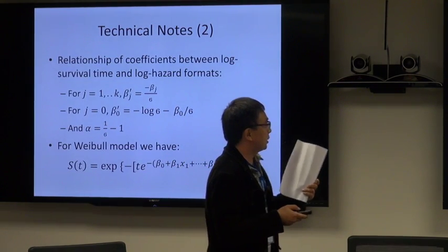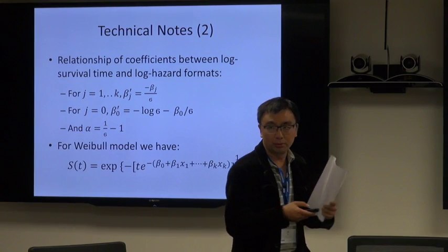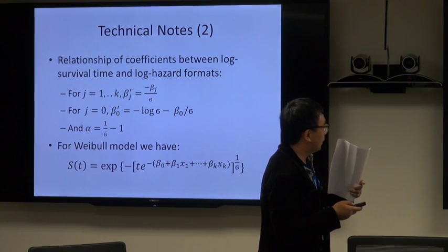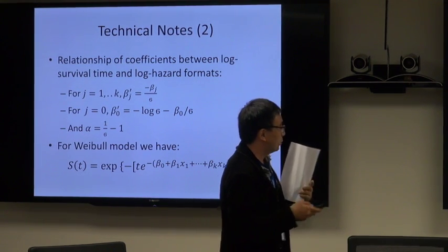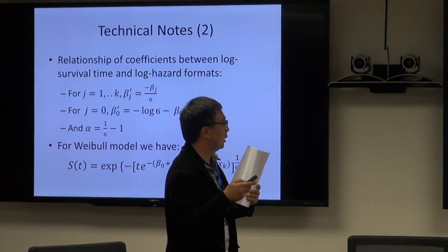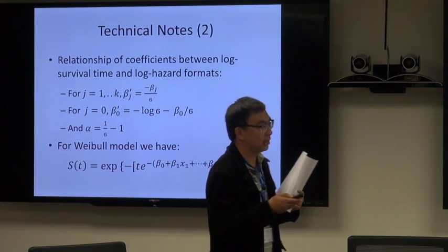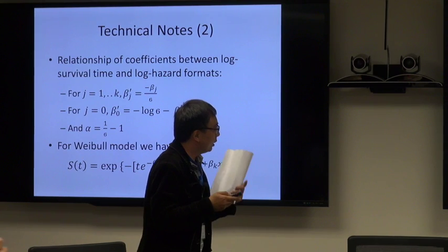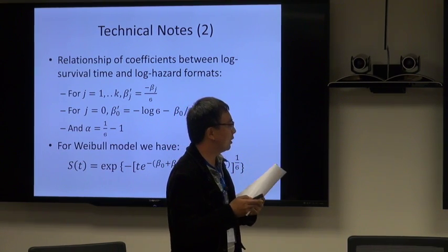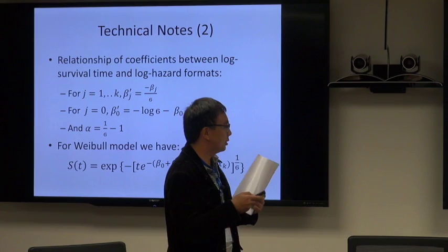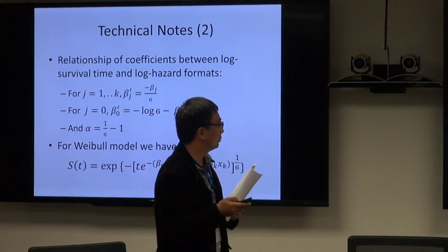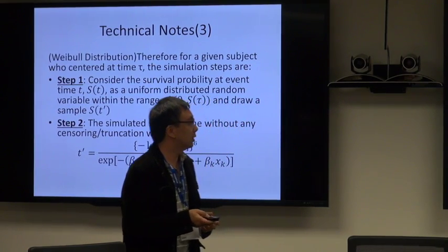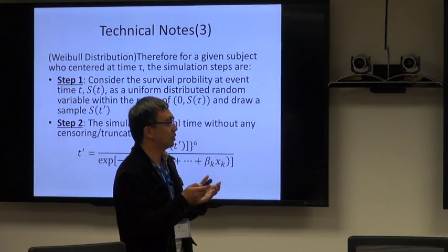This slide gives us the relationship between those two sets of coefficients. Once we have this relationship, recall that the coefficients for the log survival format can be obtained from PROC LIFREG output. Then the survival probability can be represented with the coefficients directly from PROC LIFREG. With all this knowledge, it will be straightforward to simulate survival time.